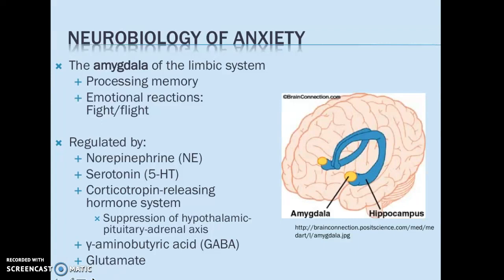We also have our primary excitatory and inhibitory neurotransmitters: GABA-aminobutyric acid, or GABA, and glutamate. An imbalance in these two neurotransmitters is associated with the development of anxiety-type symptoms.